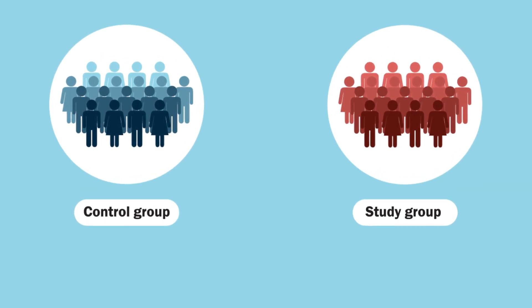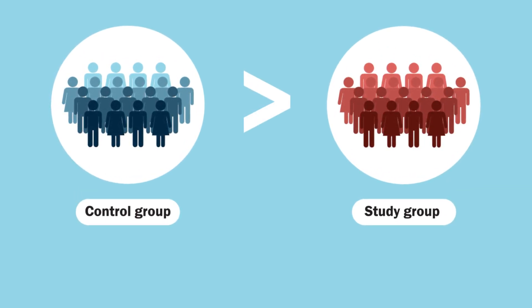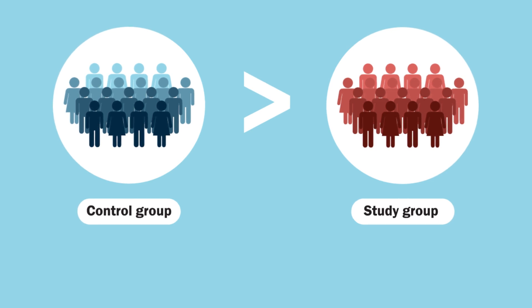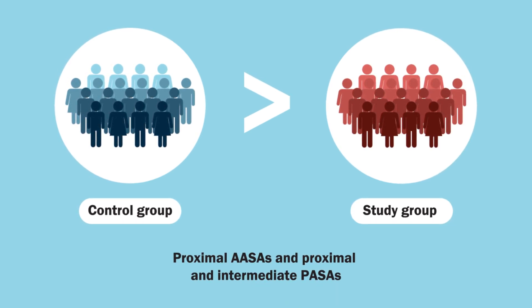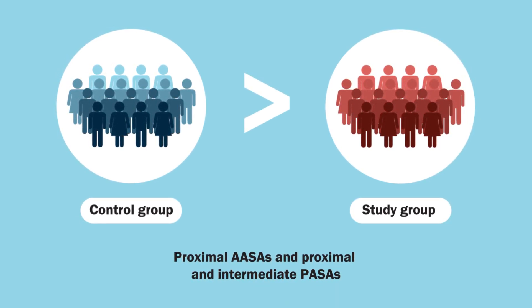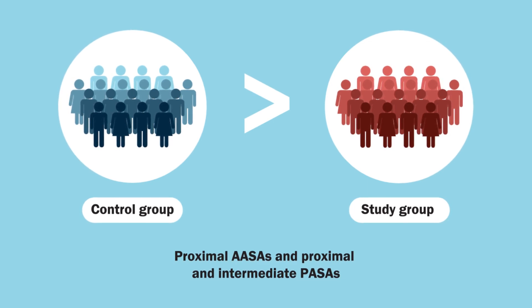ASAs in the study group were found to be smaller than those in the control group, with the most pronounced differences seen in proximal anterior ASAs and proximal and intermediate posterior ASAs.